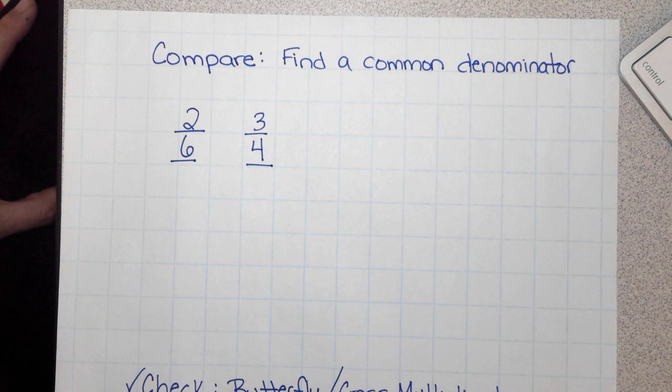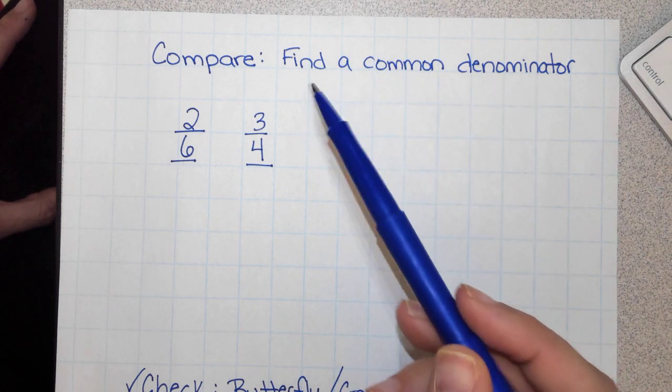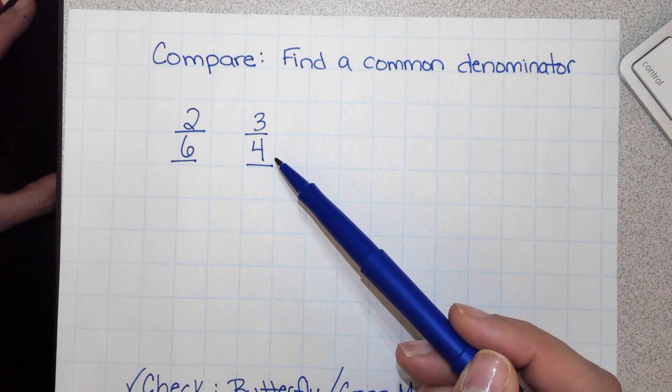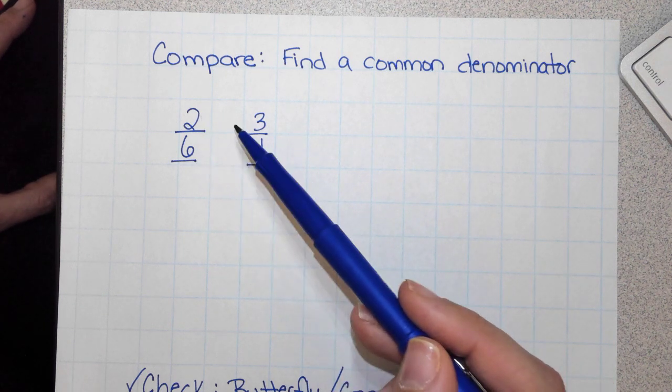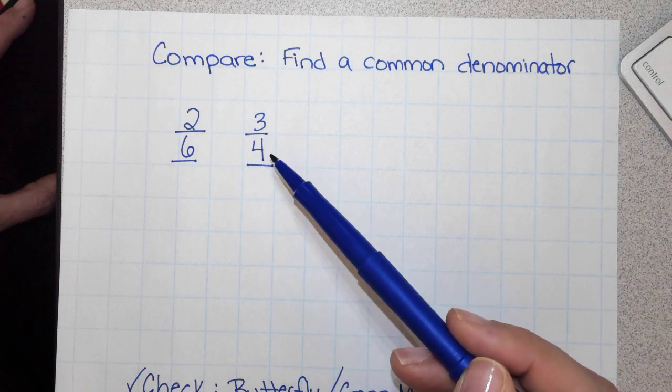Today we're going to talk about how to compare fractions by finding a common denominator. For example, I have 2 sixths and 3 fourths, and I need to determine if 2 sixths is greater than 3 fourths or if 2 sixths is less than 3 fourths.